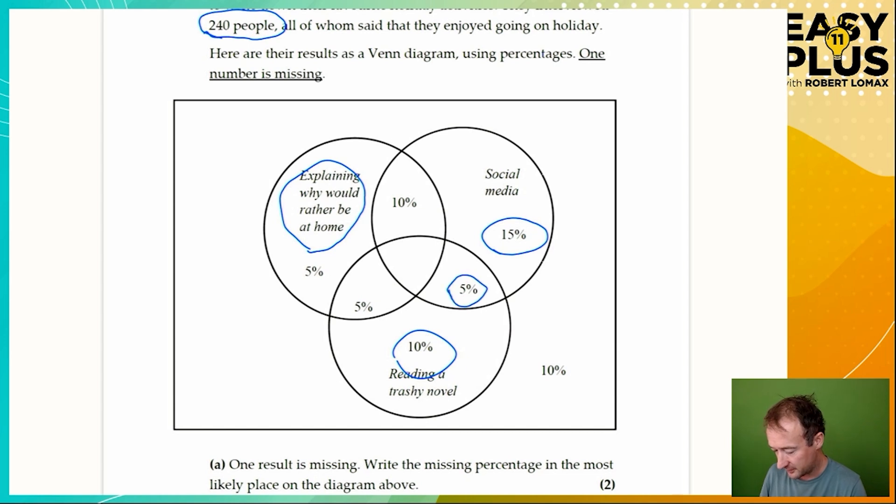Let's talk about what this diagram actually means. For example, 15% of people said I like going on social media. 10% said that they enjoyed reading a trashy novel. And 5% liked explaining why they'd rather be at home. But what about this here? This tells us that 5% of people said that they enjoyed social media and reading a trashy novel. So 15% of people only mentioned social media. We can also see that 10% enjoyed both social media and explaining why they'd rather be at home.